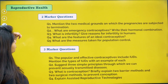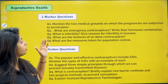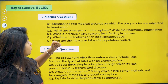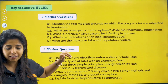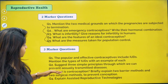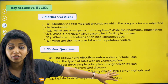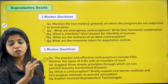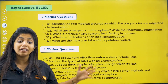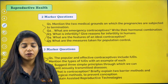Going ahead with the next chapter: reproductive health. Two-marker question: mention the two medical grounds on which pregnancies are subjected to termination. What are emergency contraceptives? Their hormonal combination — that is progesterone and estrogen. What is infertility? Give reasons for infertility. What are the features of an ideal contraceptive, and what are the measures taken for population control? Three-marker question: the popular and effective contraceptives include IUDs — mention the types of IUDs with an example of each. IUDs are best for spacing children. The most widely accepted contraceptives are IUDs and oral pills.